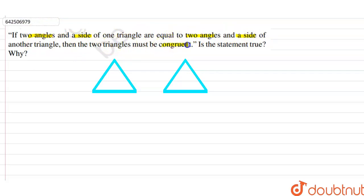Is this statement true or not? Why? Right, so let's understand this question by one example. Let's suppose this is triangle ABC and this is triangle PQR.